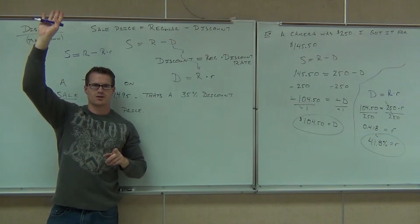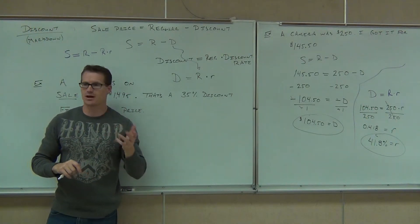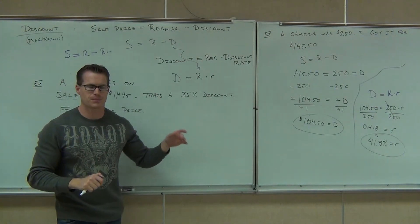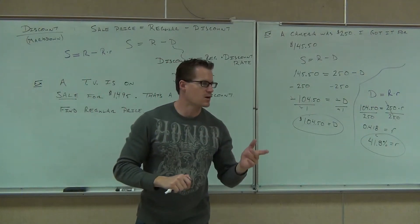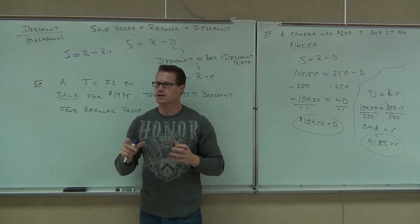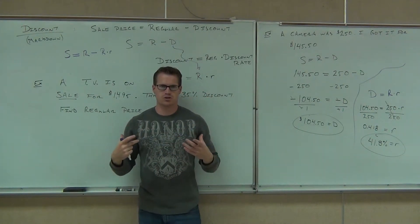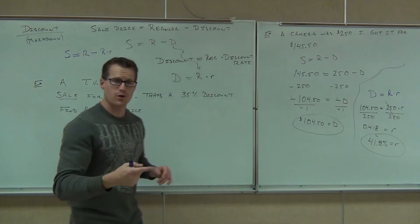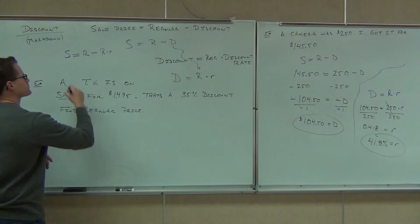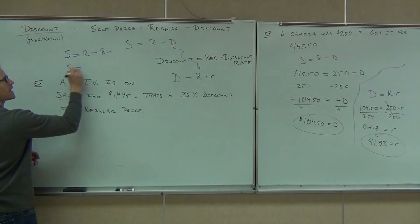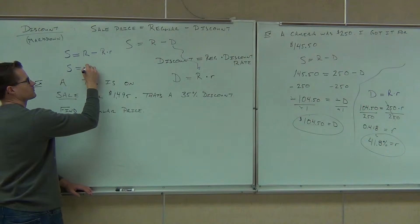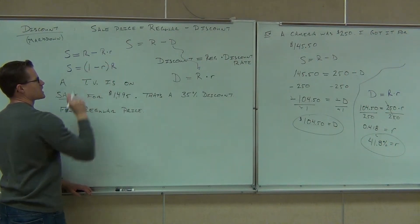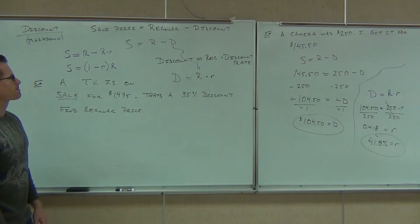Now, the key part you're not too comfortable with: that's a substitution — you should be okay with substitution, you did evaluations all the time. Here's the thing you're probably not comfortable with: we're going to factor something. Factoring is the opposite of distribution. Whereas distribution you multiply, factoring means you divide. I want you to notice that it does work. If I factor, what I'm going to get is 1 minus r times big R.